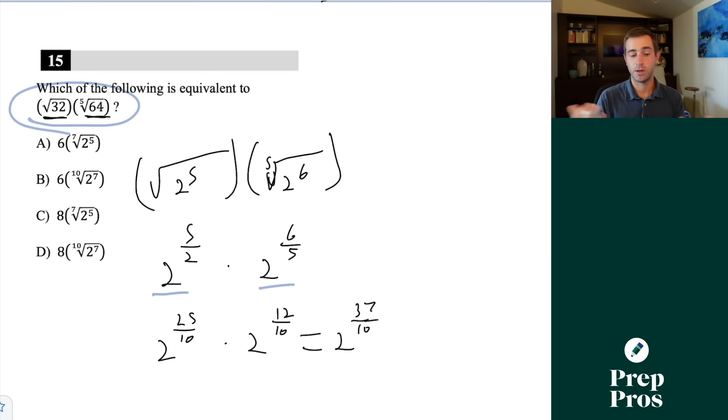We've done everything perfectly, but none of our answer choices seem to match up. This is the tricky thing the SAT has started doing in the last year. We can also re-express this as 2 to the 30 over 10 times 2 to the 7 over 10, which is the same as 2 to the 3rd times 2 to the 7 over 10. Our 2 to the 3rd is the same as 8, and using our fraction power rule, 2 to the 7 over 10 is the same as the 10th root of 2 to the 7th. That's how we find our correct answer of D.